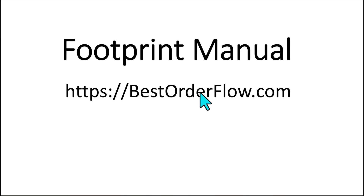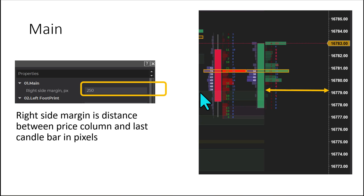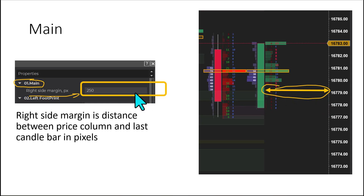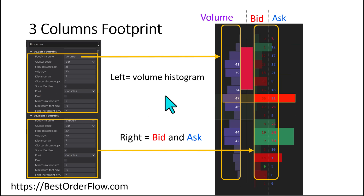This is the footprint manual for bestorderflow.com. The main option, number one, is 'simple.' It is the margin in pixels from the right side — how far the first bar will be from the right side. Currently it is 250 pixels.